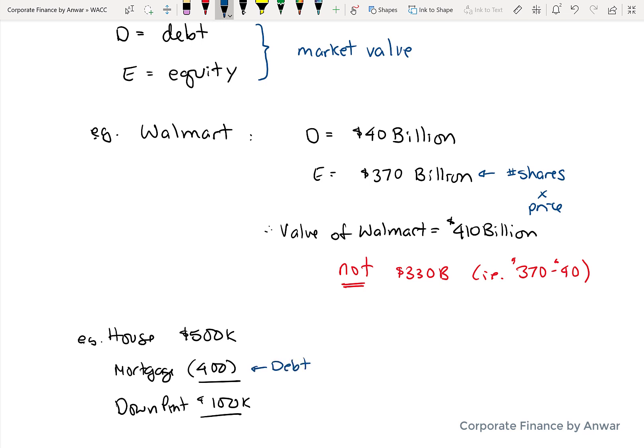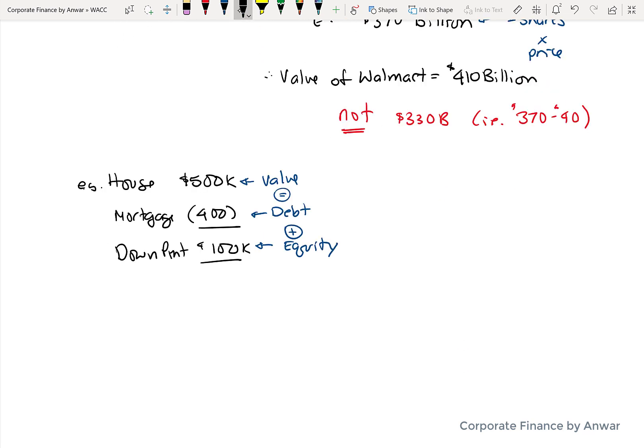Now, if I was to break each of these components down, the mortgage is equal to the debt. The down payment is your equity in the house. And the value of the house is the $500,000, which we were told at the beginning. So the value is equal to debt plus equity. And it's not going to change regardless of how much your mortgage is.